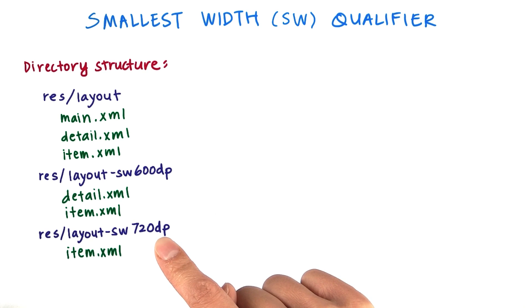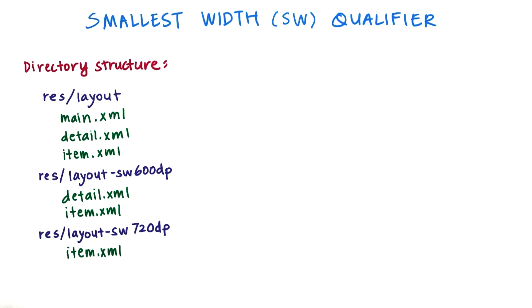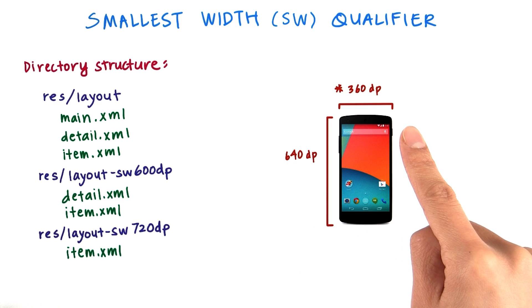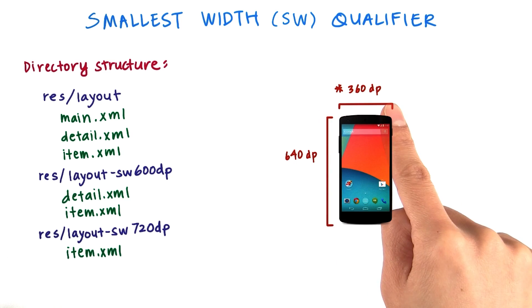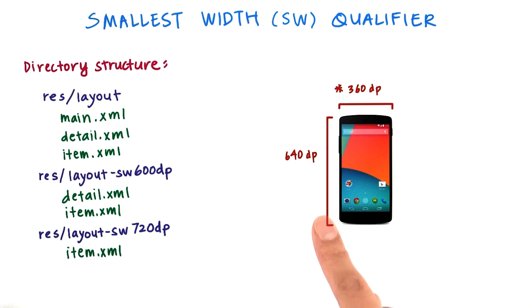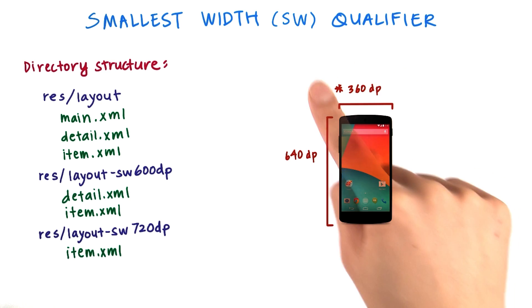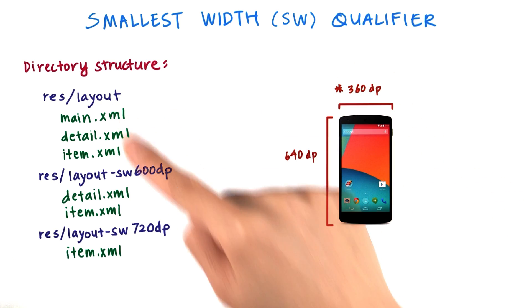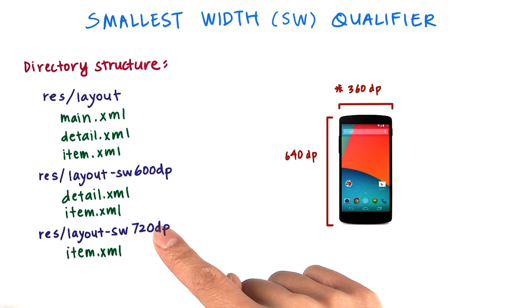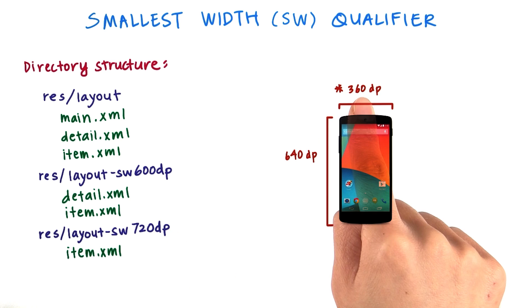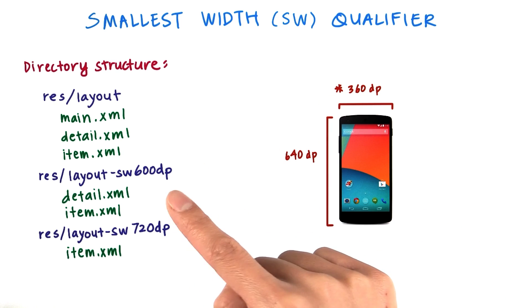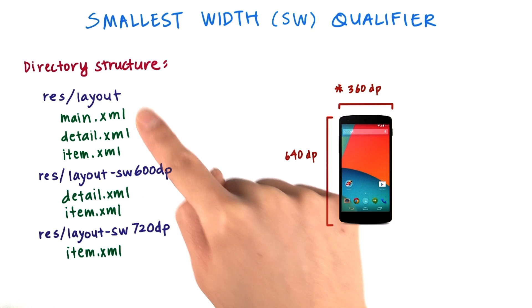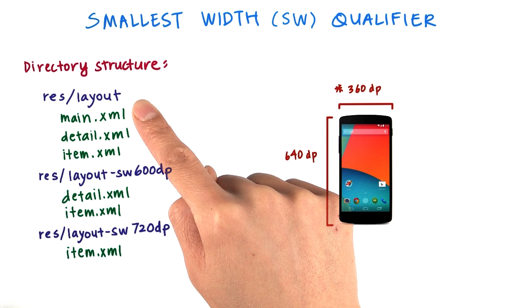Let's look at which layouts would be applied on which device. Say your app is running on a Nexus 5. The Nexus 5 has dimensions 360dp by 640dp. Of the two, the smallest width is 360dp, so we use this number to compare against the folder names. 360dp is less than 600 and it's less than 720, so all the layouts will come from the base layout folder.